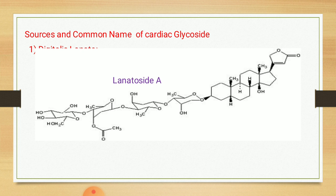This is the structure of lanatoside A. As we saw in the previous lecture about the chemistry of cardiac glycoside, it consists of two parts: the aglycon part and the glycon part. The aglycon part means the non-sugar part, which consists of the steroidal nucleus. The glycon part consists of various types of sugars. In the case of lanatoside A, the aglycon part is digitoxigenin, attached through the hydroxyl group on the third position of the aglycon part to the glycon part.